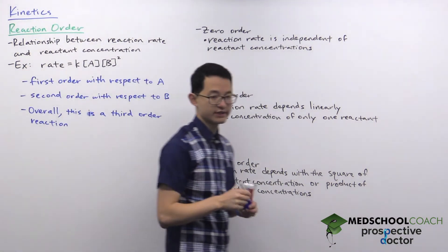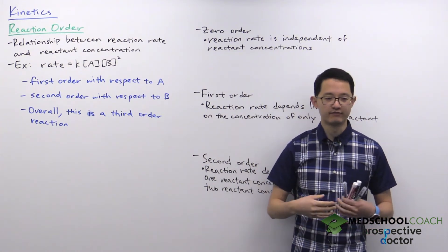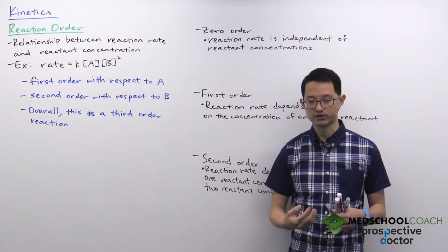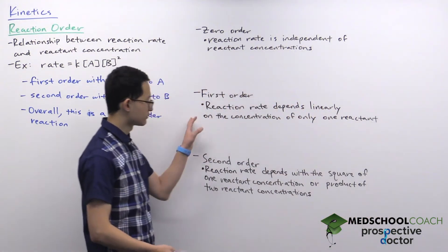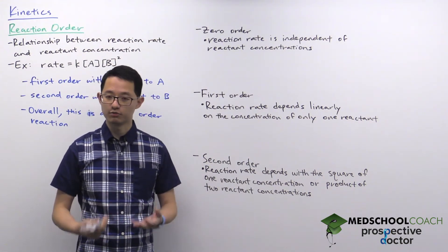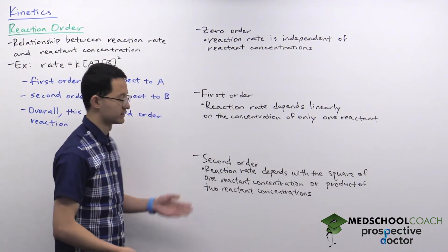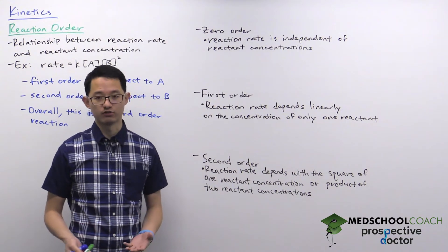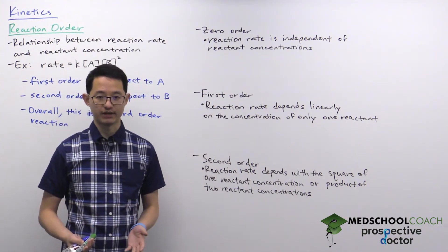The next thing to discuss is what different reaction orders mean — zeroth order, first order, and second order. We'll go through these three, and while there are many possible reaction orders, understanding zeroth, first, and second order will allow you to figure out the others. These are also the ones that generally show up on the MCAT.